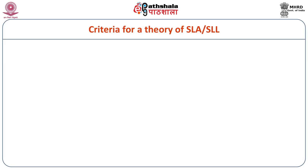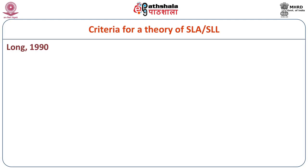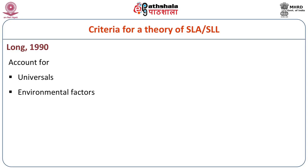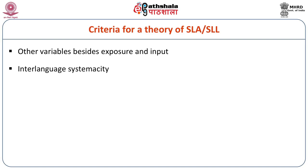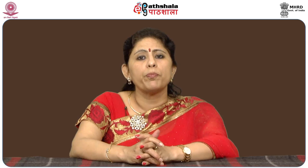According to Long's 1990 criteria for a theory of second language acquisition, it must account for universals, environmental factors, age, acquisition rate and proficiency, cognitive and personal variables, learning as well as acquisition, other variables besides exposure and input, interlanguage systematology, and the varied cognitive processes involved in acquisition. All these — age, capability, situation, demand — have a great role to play in second language acquisition. Cognitive variance, second culture learning, new linguistic system, and communication functions all have their role.